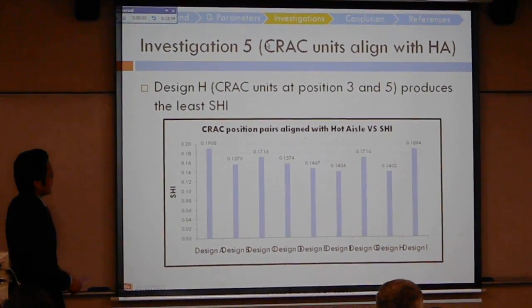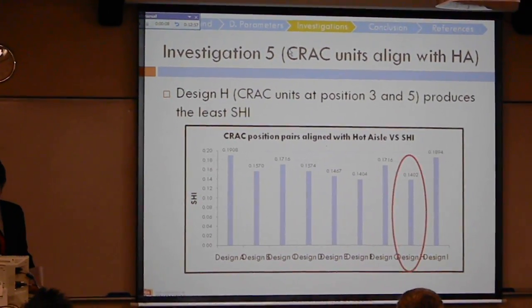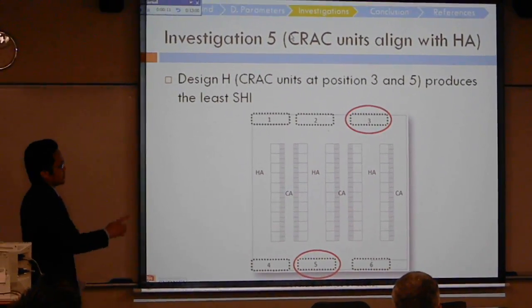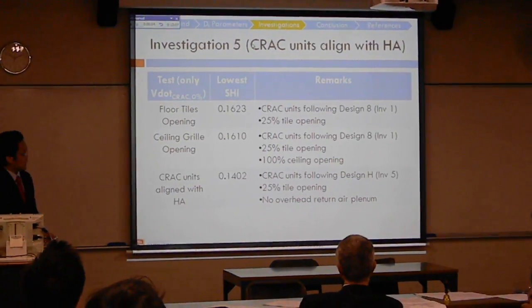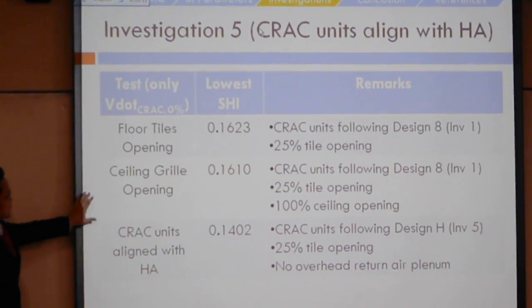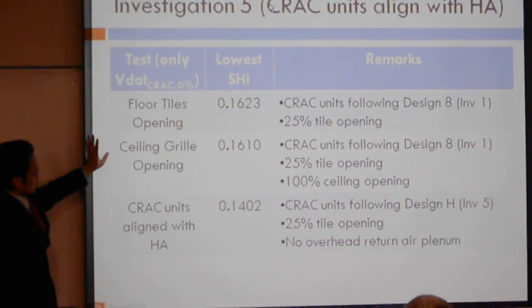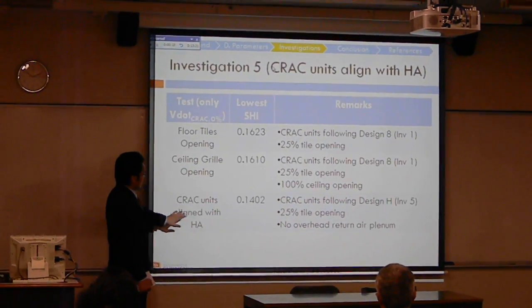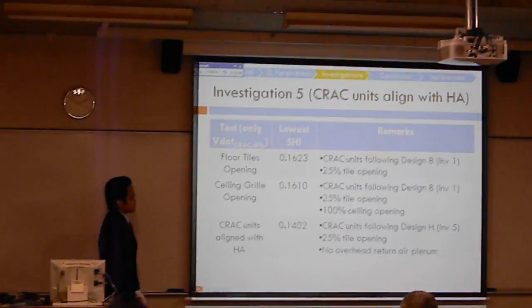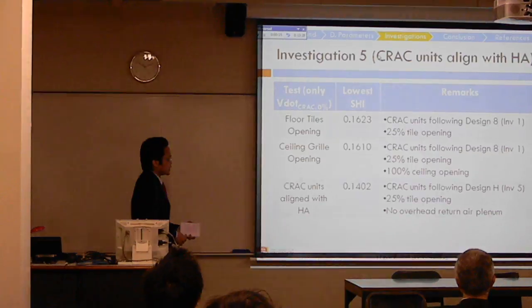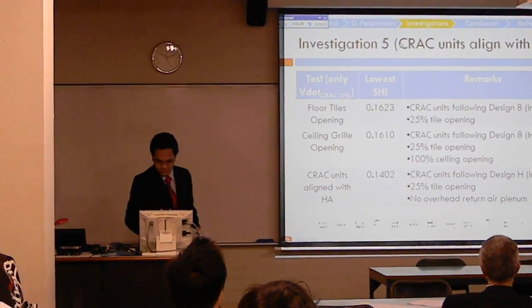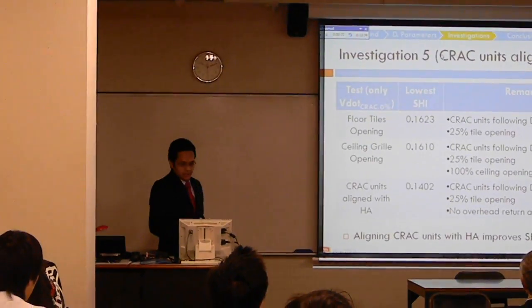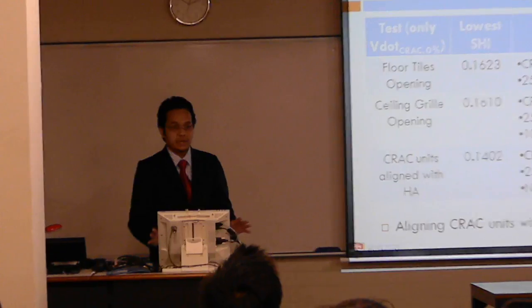The result shows the configuration with the lowest SHI at the following positions: Position 3 for CRAC 1 and Position 5 for CRAC 2. This is the comparison between Investigation 5, Investigation 4, and Investigation 3 — there is a significant reduction in SHI value. For Investigation 5, the lowest SHI obtained is 0.1402. Aligning CRAC units with the hot aisle can improve the SHI by 15%, particularly for this study.